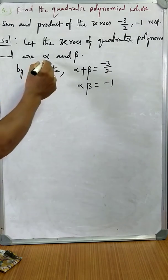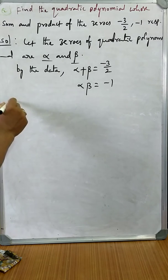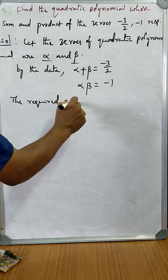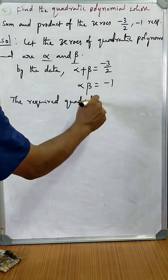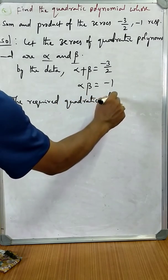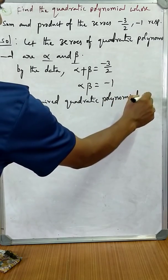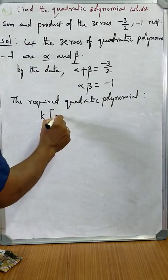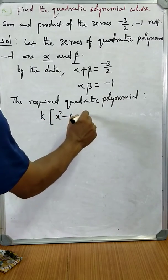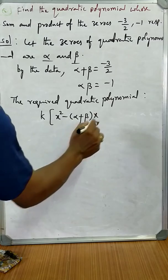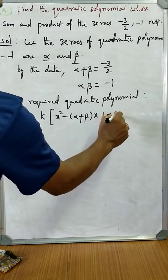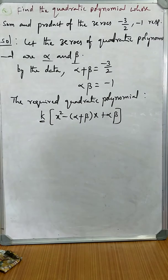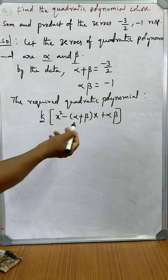If alpha and beta are the zeros, then the required quadratic polynomial is k times x square minus sum of the zeros into x plus product of the zeros. Why we should take k times? To avoid the fractional coefficients.